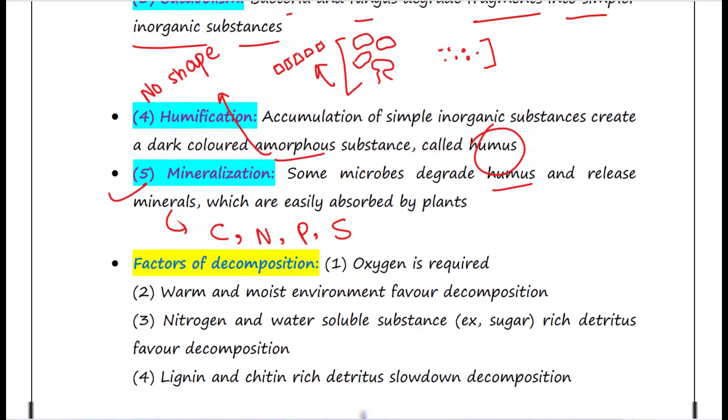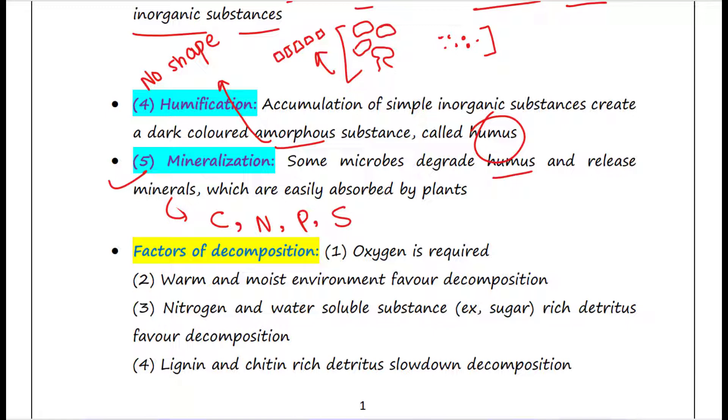Now let's talk about some factors of decomposition. First of all, oxygen is required in this decomposition process. Then warm and moist environment favor decomposition. So decomposition always requires warm environment, moist environment. In very cool environment and dry environment, decomposition doesn't go well.